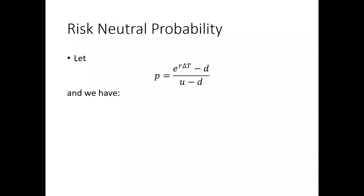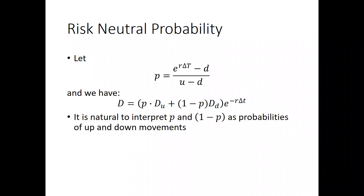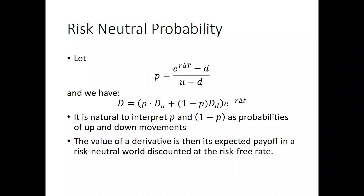If we substitute p equals e to the r delta t minus d over u minus d, we get d equals p times d sub u plus 1 minus p times d sub d, the whole quantity times e to the minus r delta t. It's natural to interpret p and 1 minus p as probabilities of up and down movements. But these probabilities are not real probabilities — these are what's known as the risk-neutral probabilities. So the value of the derivative is the expected payoff in a risk-neutral world discounted at the risk-free rate.